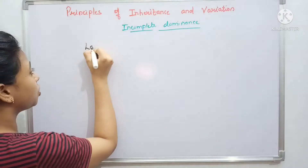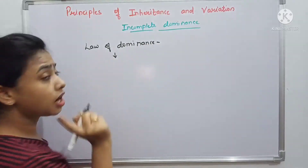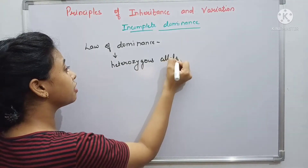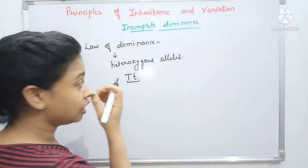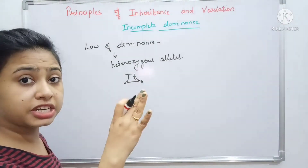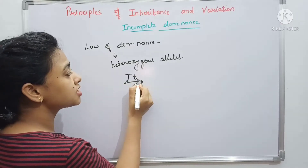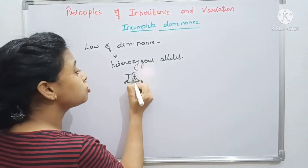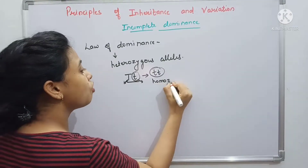The first law of Mendel was the law of dominance. According to this law, Mendel stated that if a heterozygous allele is present, one allele is dominant over the other — one allele always acts as a dominant allele and another allele acts as a recessive allele. The dominant allele is expressed while the recessive allele is not expressed. The recessive allele can only be expressed in its homozygous condition.